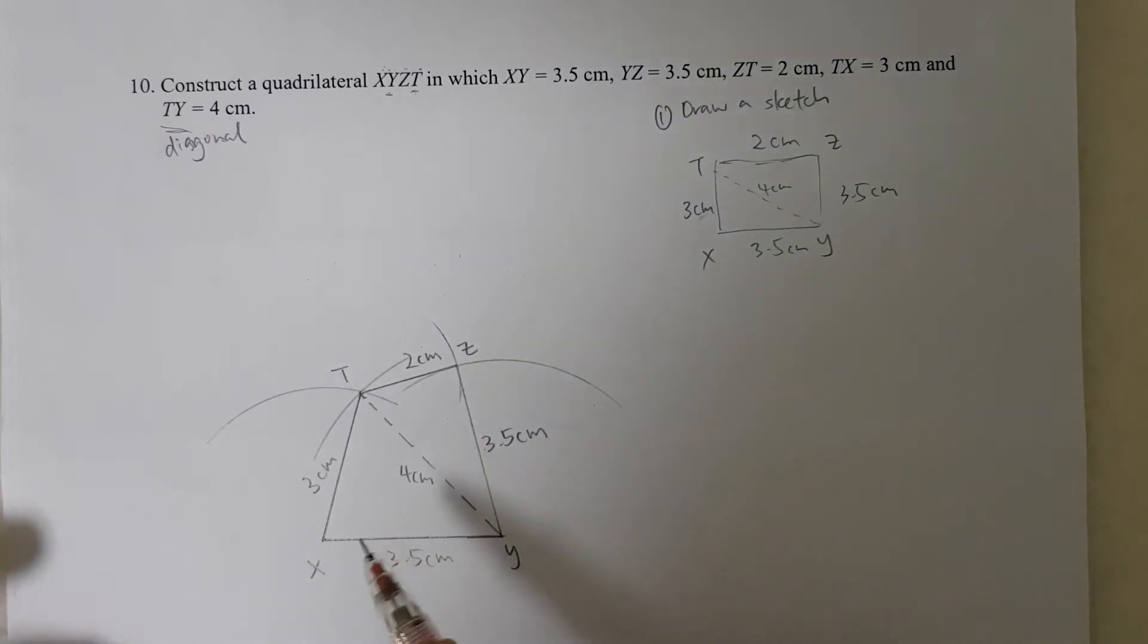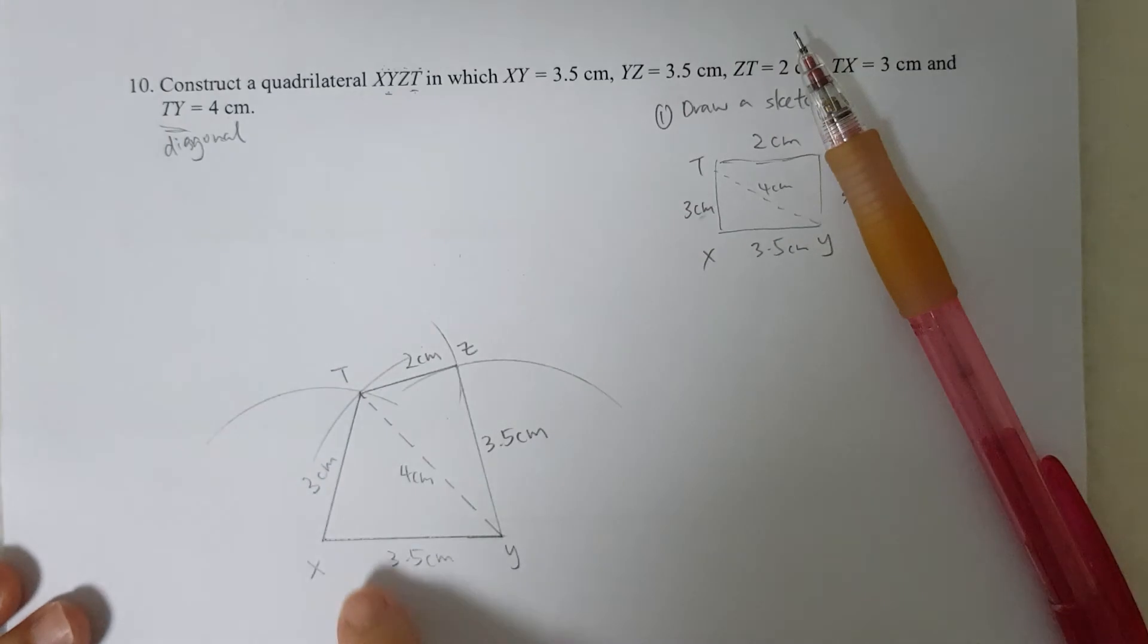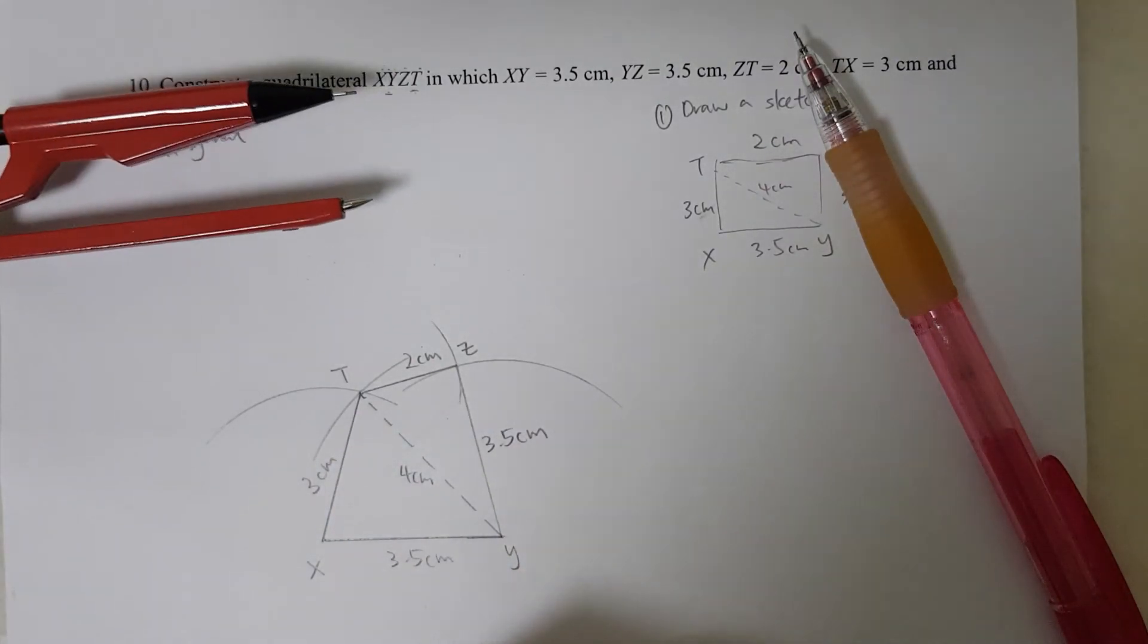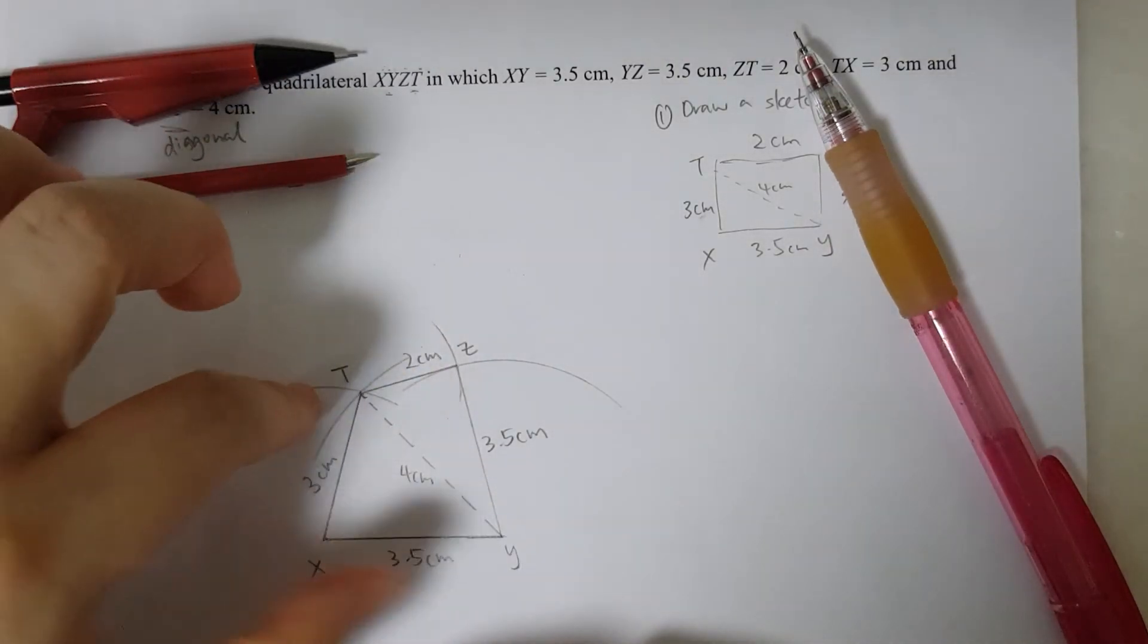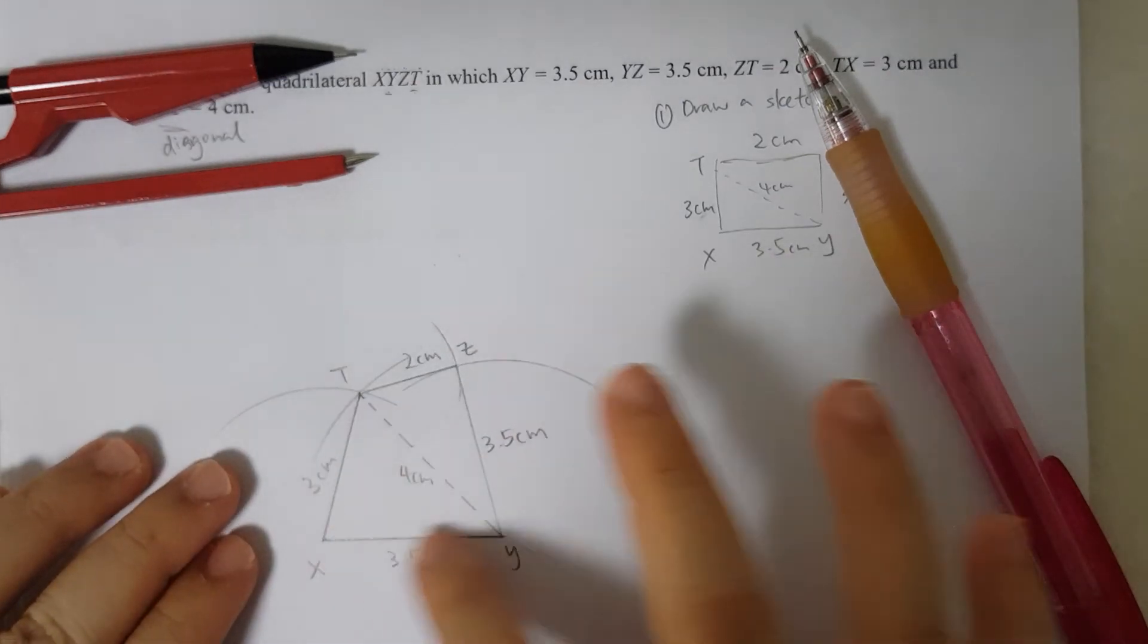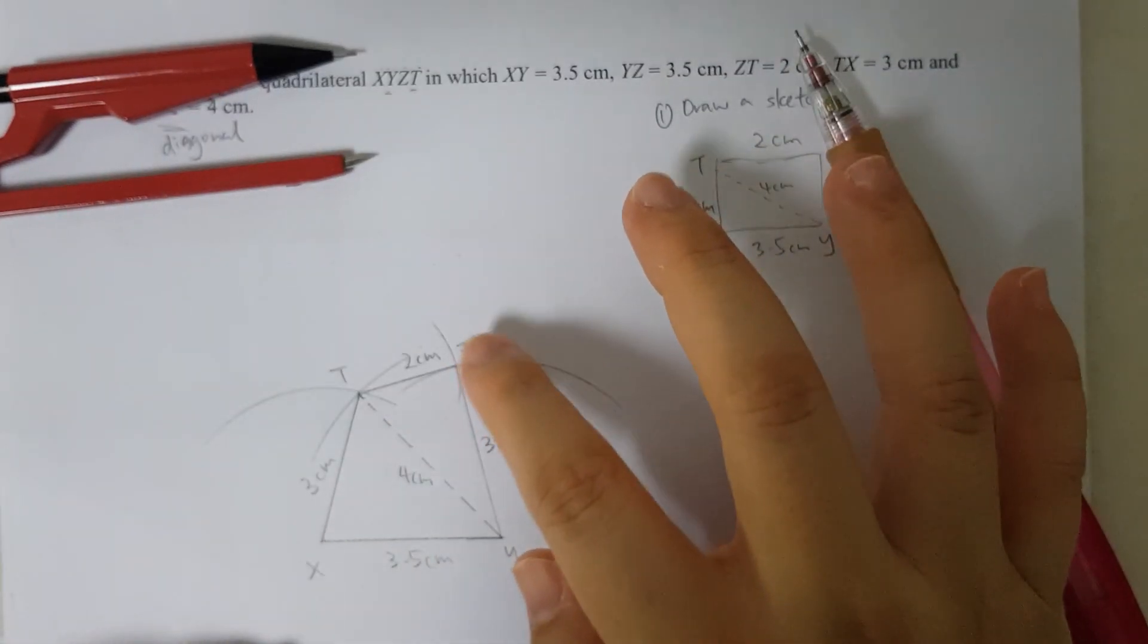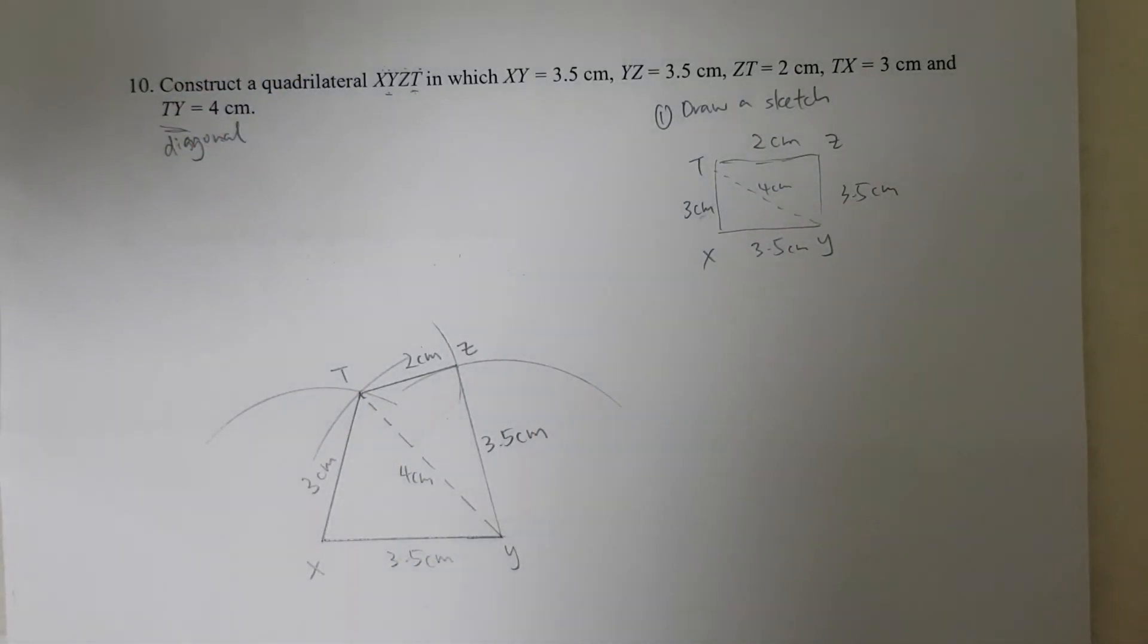I'm treating this quadrilateral as kind of two different triangles where I plot two points. Then to find the third point, because I only have the lengths, I need to use my compass to help me find the point of intersection so that both criteria are met. Then after I'm done with this triangle, I'll go on to the fourth point to find my Z. This is for question number 10.